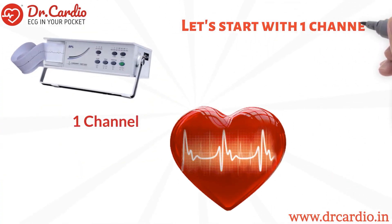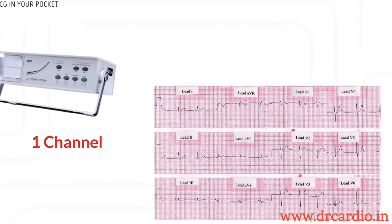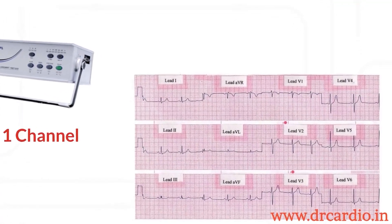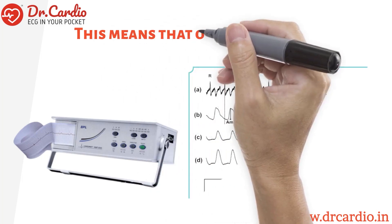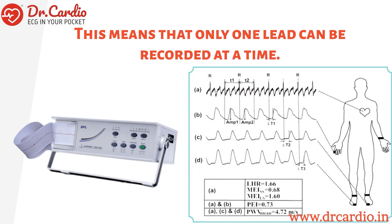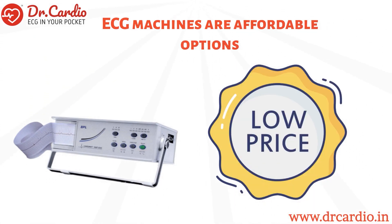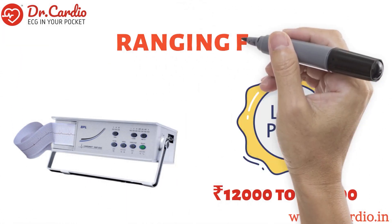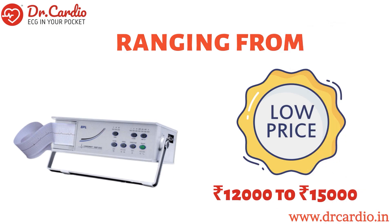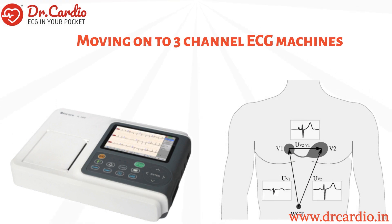Let us start with 1 channel ECG machines, which only have 1 channel for recording the electrical activity of the heart. This means that only 1 lead can be recorded at a time. 1 channel ECG machines are affordable options, typically ranging from Rs 12,000 to Rs 15,000.